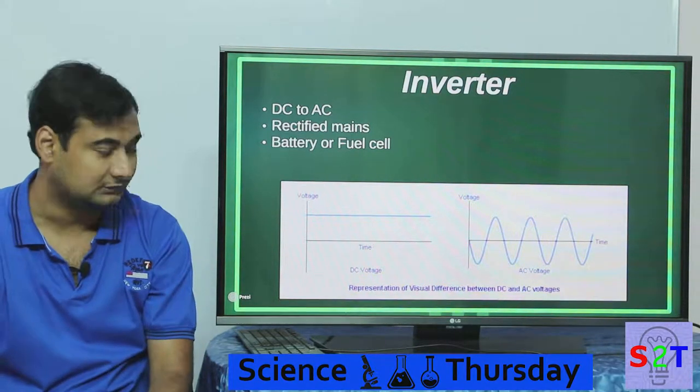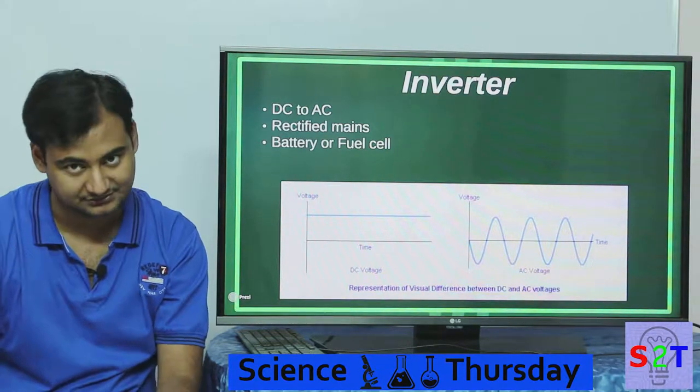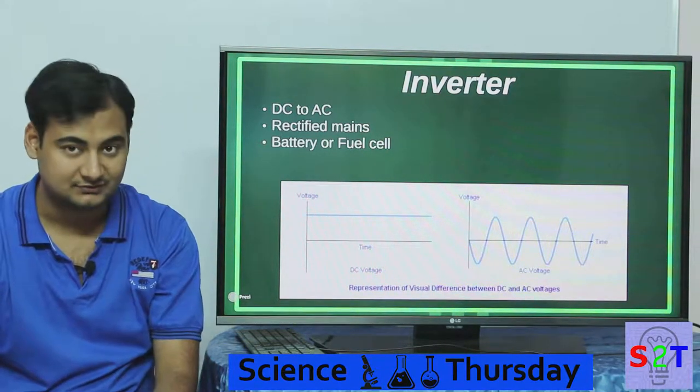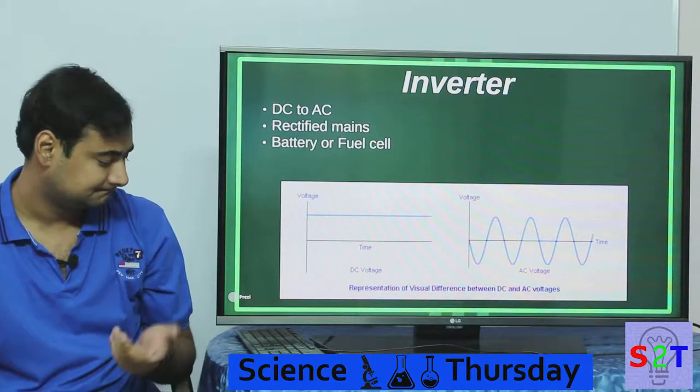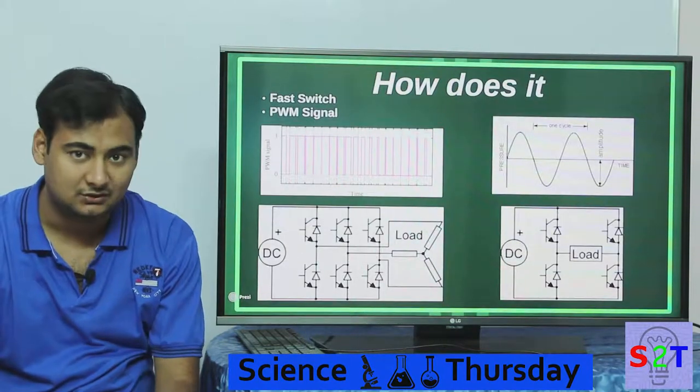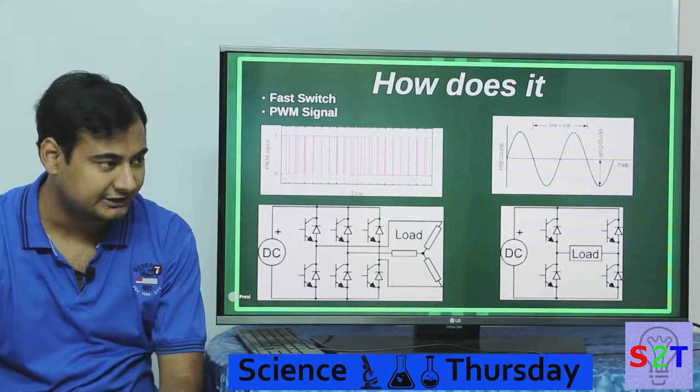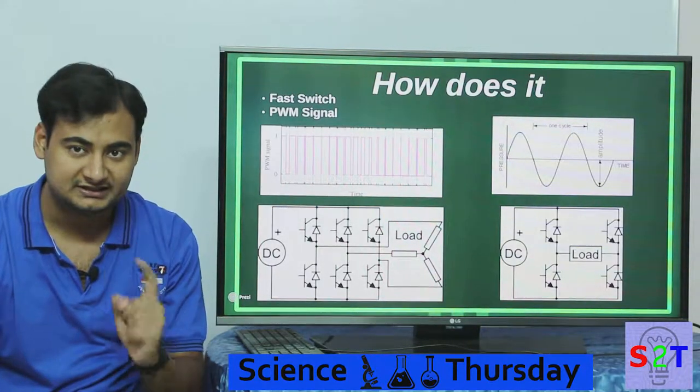Or fuel cells also - so if you see a hydrogen powered car, it also uses inverters because fuel cells also create DC current. AC is much more useful. So let's dive into it. So how does it do it? One very simple thing you have to understand: it's basically made out of two components. One is the switch.